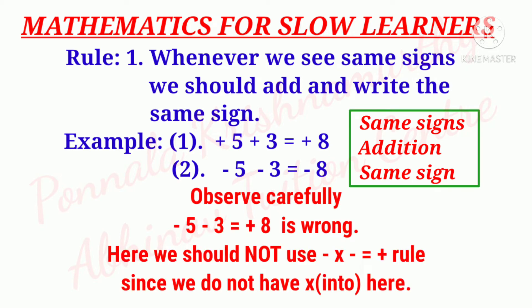Observe carefully: minus 5 minus 3 is equal to plus 8 is wrong. Here we should not use the minus into minus is equal to plus rule, since we do not have 'into' here.